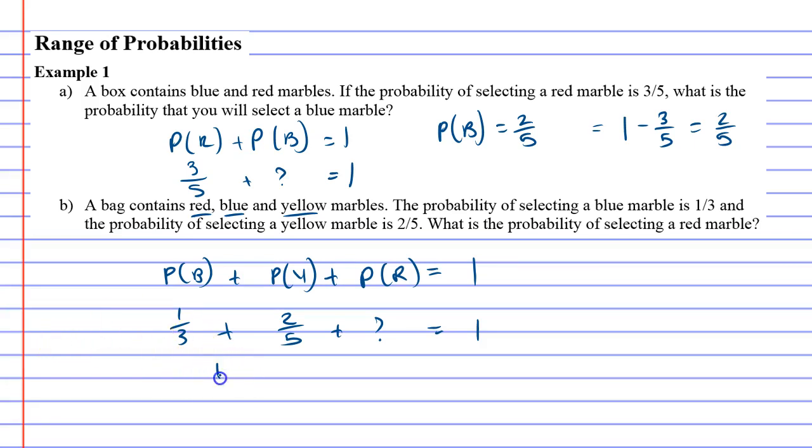So that means 11 fifteenths plus whatever the probability of red is should equal 1. When you get to this point, you can quite easily see that the probability of getting red will be 4 out of 15 in order for it to add up to 1. If I'm to do it the proper way, you're supposed to take the 1 and subtract the other probability, which will equal 4 fifteenths.